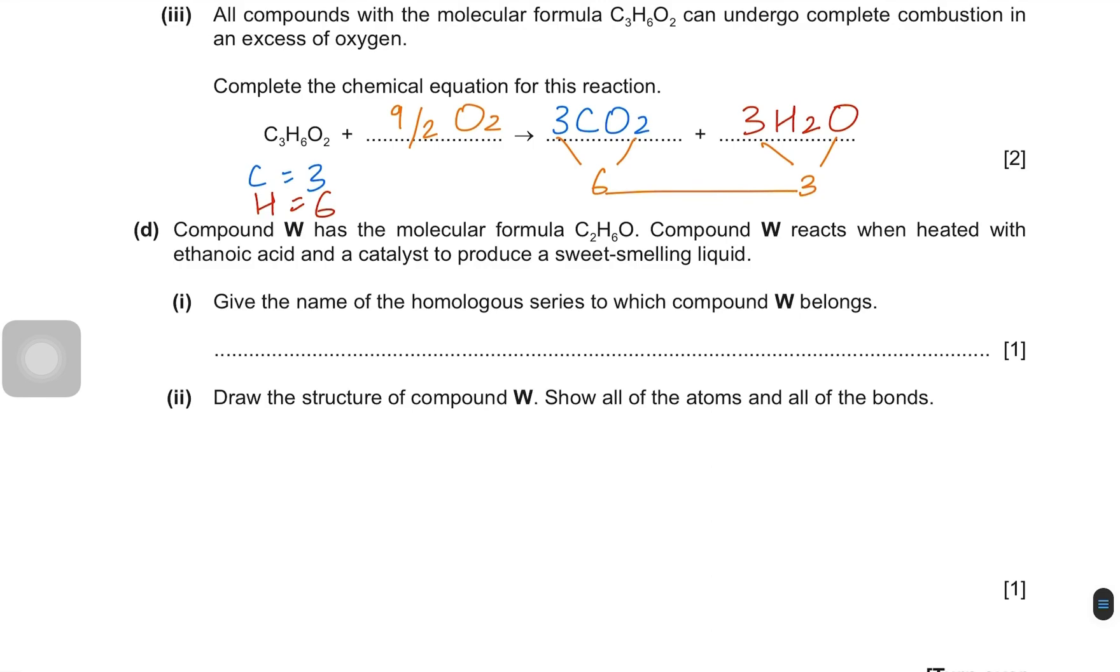Compound W has the molecular formula C2H6O. Compound W reacts when heated with ethanoic acid and a catalyst to produce a sweet smelling liquid. Sweet smelling liquids are esters. So when ethanoic acid reacts with W which has a formula C2H6O. Give the name of the homologous series to which compound W belongs. So if W is reacting with acid, then it has to be an alcohol. Because only alcohol plus acids will give you ester plus water. So W has to be an alcohol.